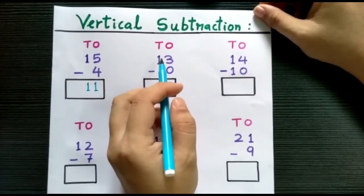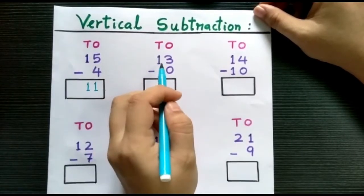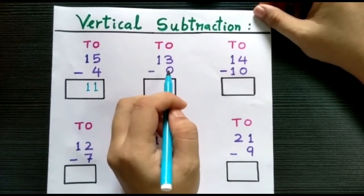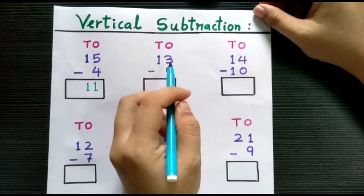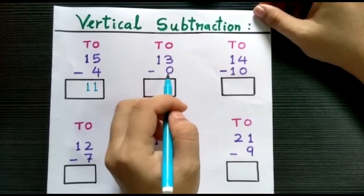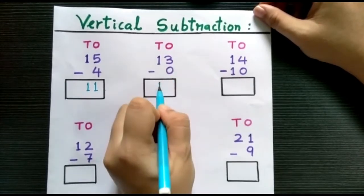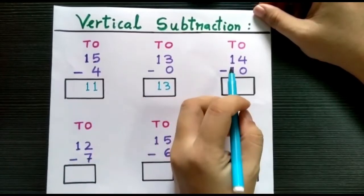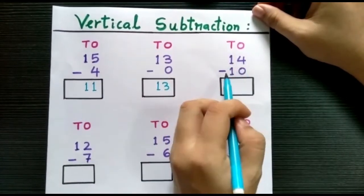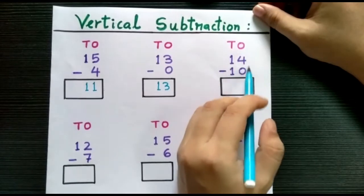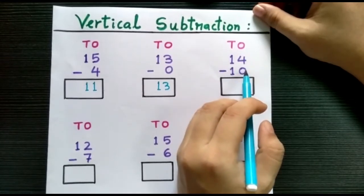Next example: we have 13 minus 0. Children, as we all know, 0 means nothing, so 13 minus 0 will remain 13 itself.